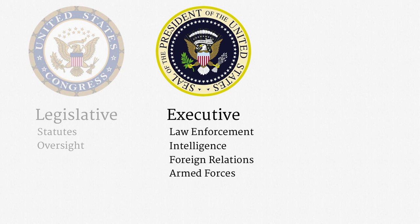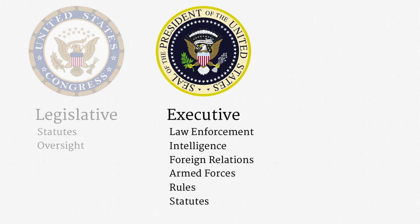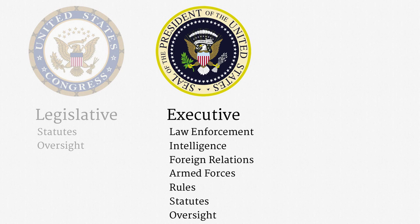As discussed, the executive branch can be empowered to make rules, and those can relate to surveillance. Also, the President has a powerful voice in the legislative process and maintains a veto over statutory enactments. Finally, the executive branch has its own internal oversight mechanisms, including inspectors general in many agencies. A recently reinvigorated Privacy and Civil Liberties Oversight Board, or PCLOB, also contributes to executive oversight.